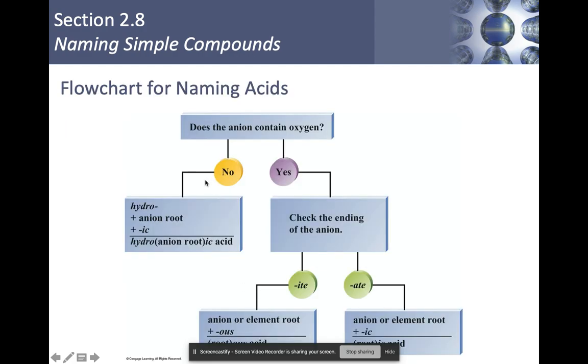And so here is our flowchart for naming acids. Does the anion contain oxygen? If it doesn't, it's hydro-blank-ic acid. On the other hand, if it does, then we have to look and see. Does the anion end in '-ate' or '-ite'? If it ends in '-ate', it's '-ic' acid. If it ends in '-ite', it's '-ous' acid. That's the end of this one. If you have any questions, please let me know.